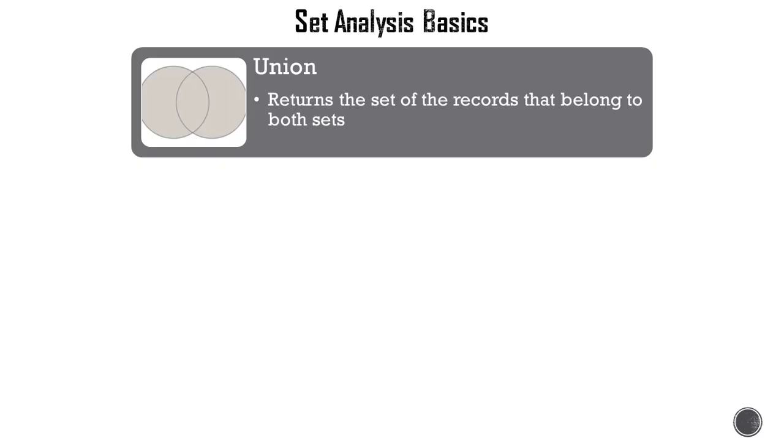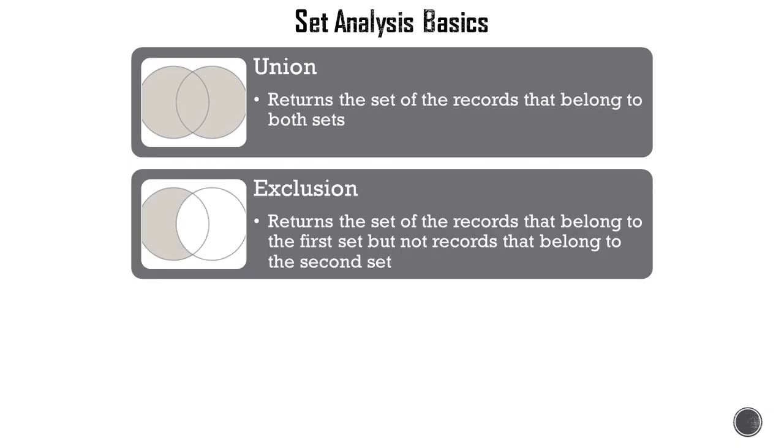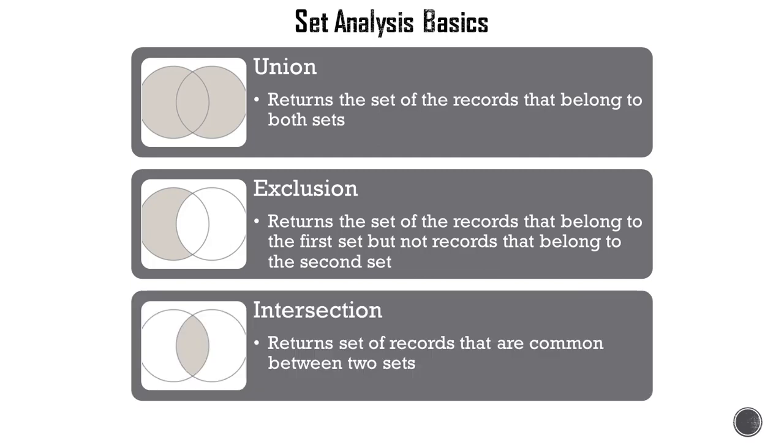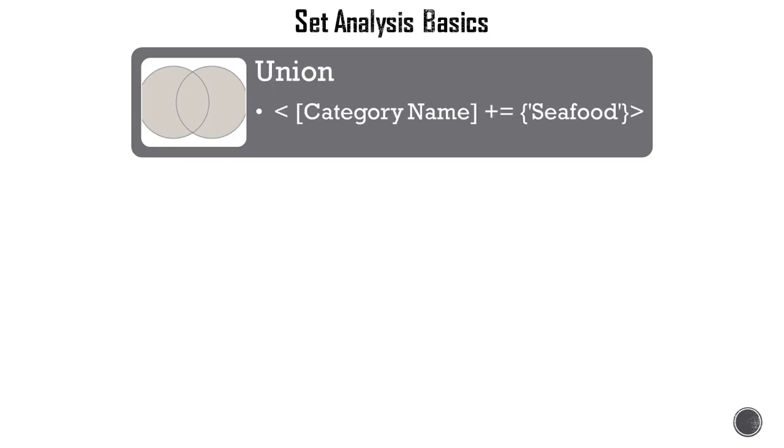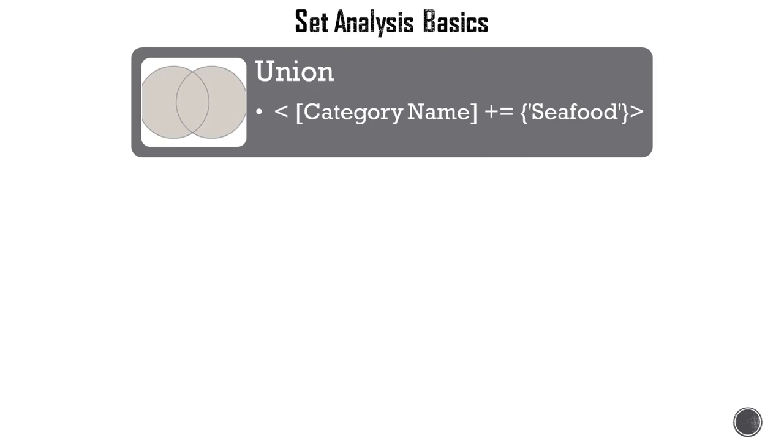Now let's look at some of the operators. Union in classic set theory combines records from both sets. Exclusive means it's returned set of records that belong to the first set but not to the second set. And then intersection obviously renders record set of common values between two sets. Some examples: union in this example shows category name of Seafood. If a user makes selections on various categories, and even if the user excludes Seafood as a selection, this will include Seafood as a selection along with other selections that user has already made on that field called category name.